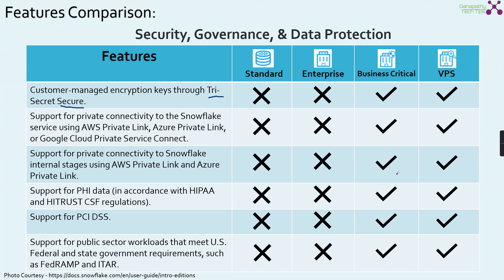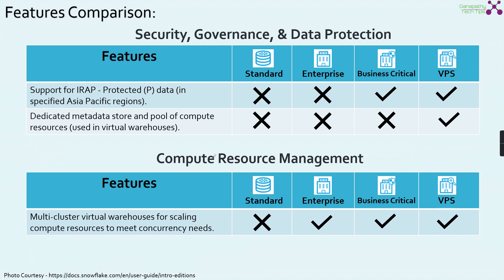Moving on to the final stuff in this category — support for IRAP, which is protected data in the Asia Pacific regions, is a Business Critical option. Finally, dedicated metadata store and pool of compute resources used in virtual warehouses — that is the VPS option. This is the only thing dedicated to VPS. Very important to know — please make a note of it.